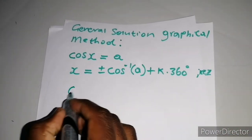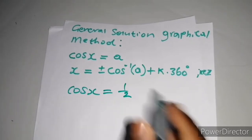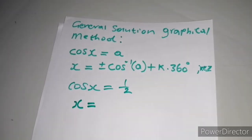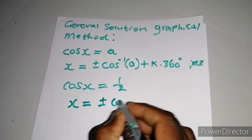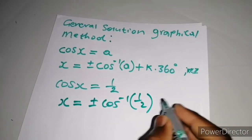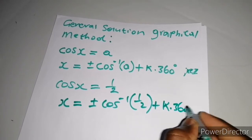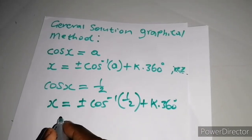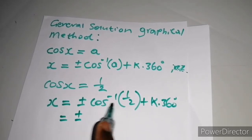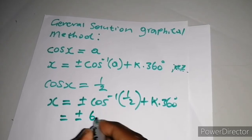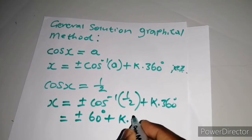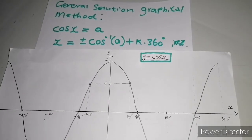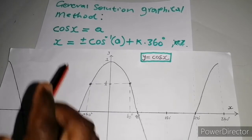We're going to present it as follows. For example, if we rearrange and have cosine of x equal to half and they say find the general solution, we use this form: x equals plus or minus arccos(1/2) plus k multiplied by 360. Don't forget, k is an element of integers. When we work this out on our calculator, arccos of half is 60 degrees, so x equals plus or minus 60 degrees plus k multiplied by 360. Those are our two general solutions.